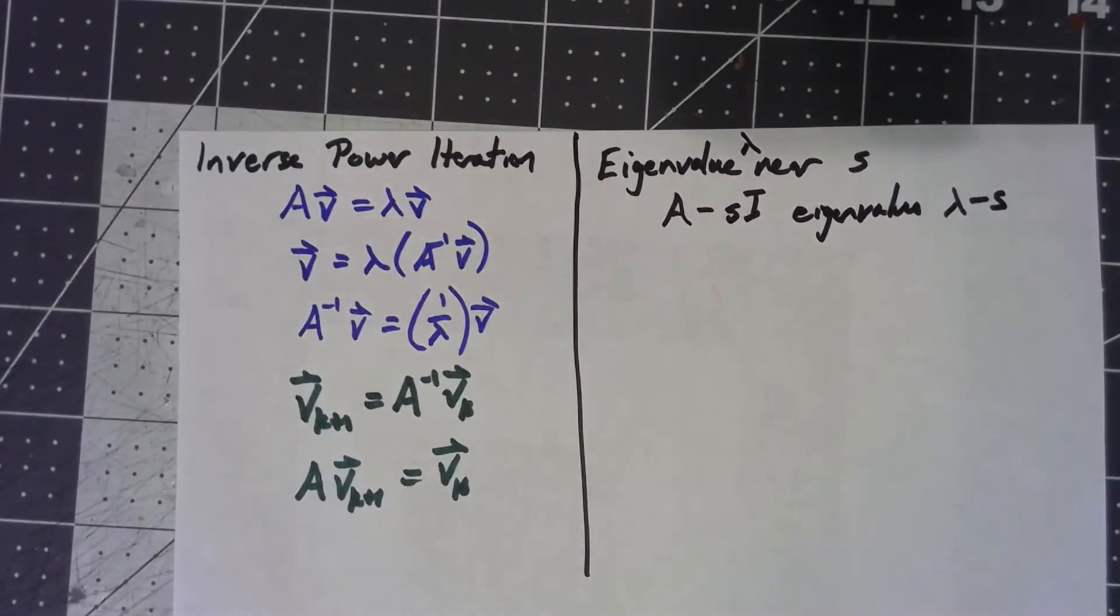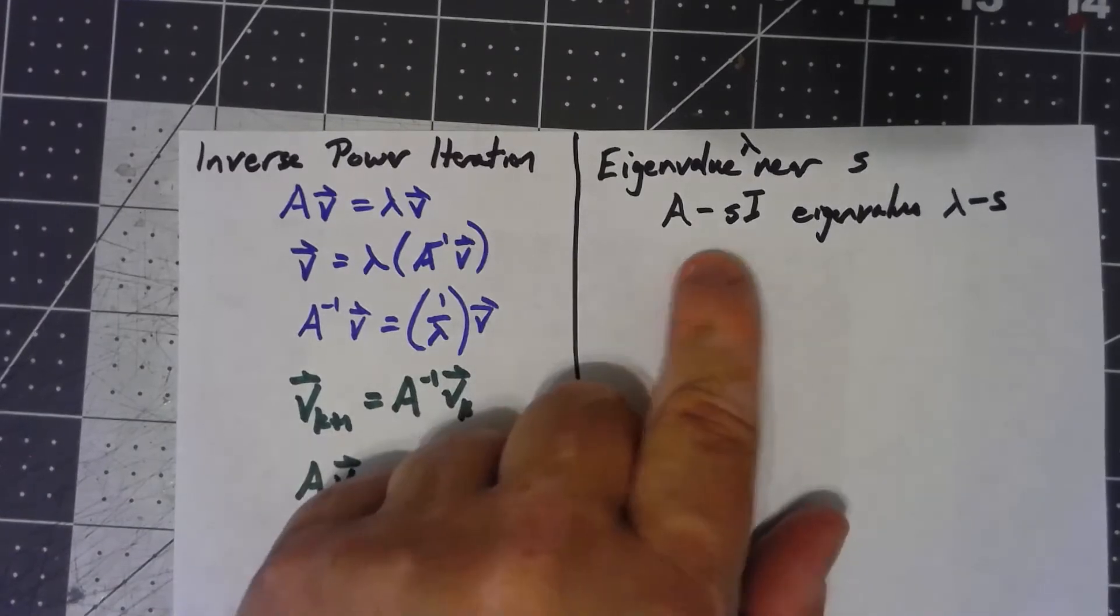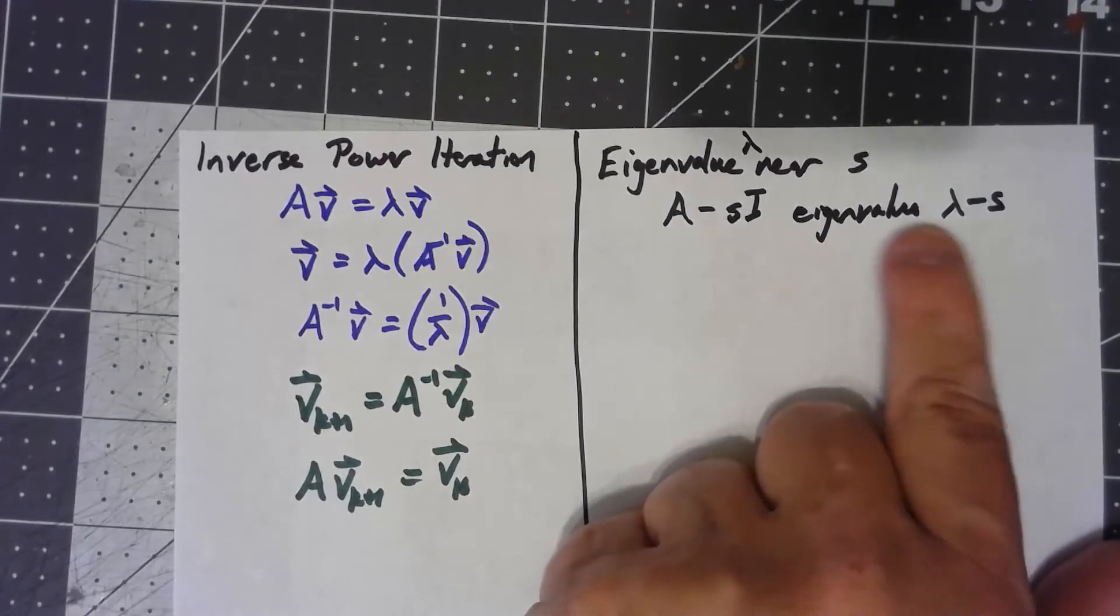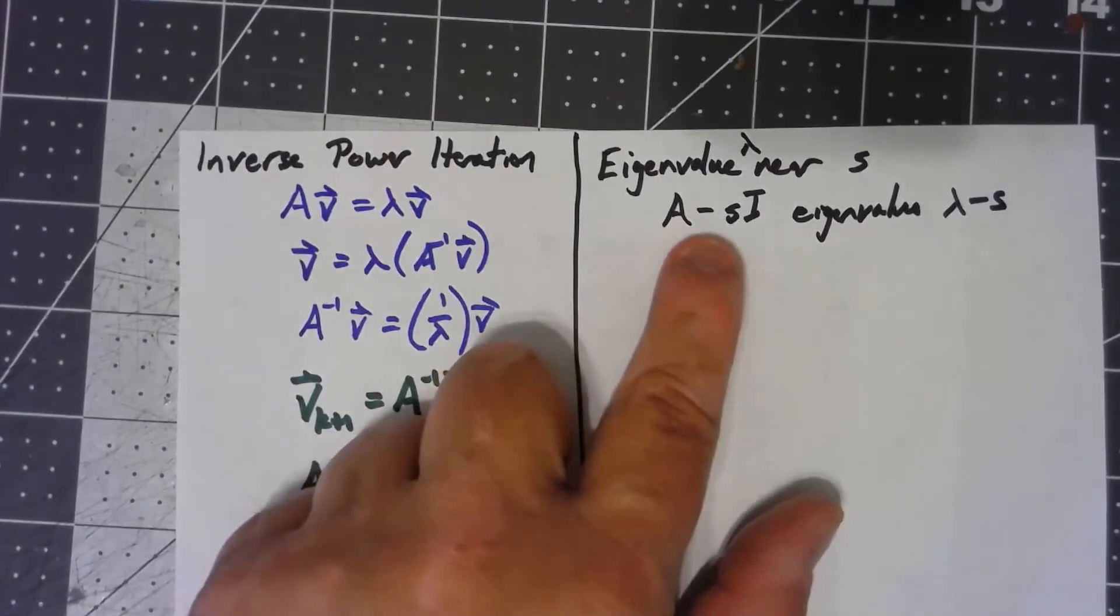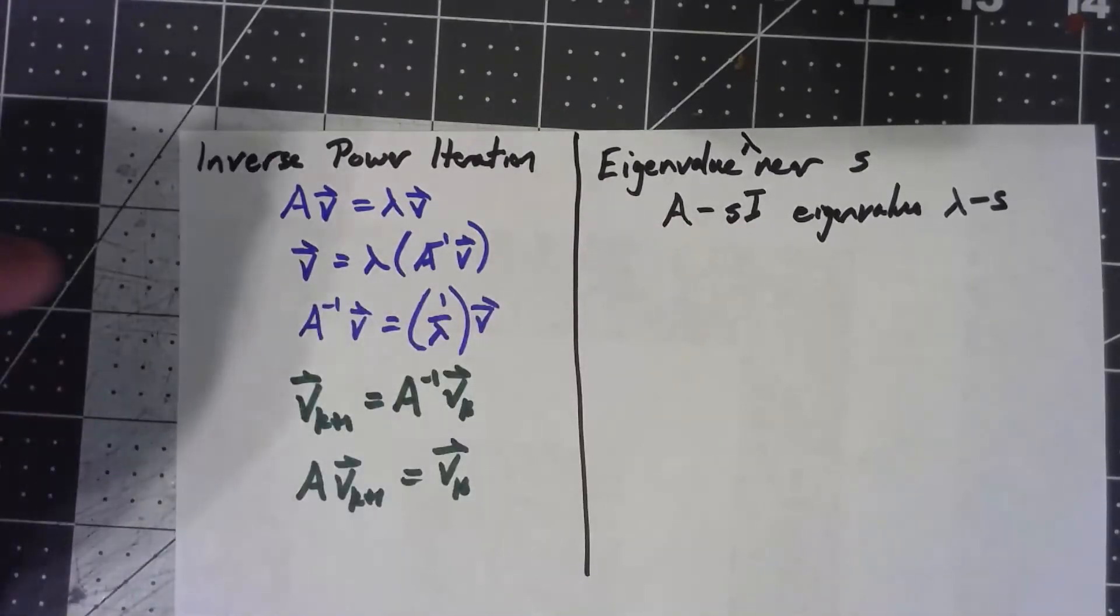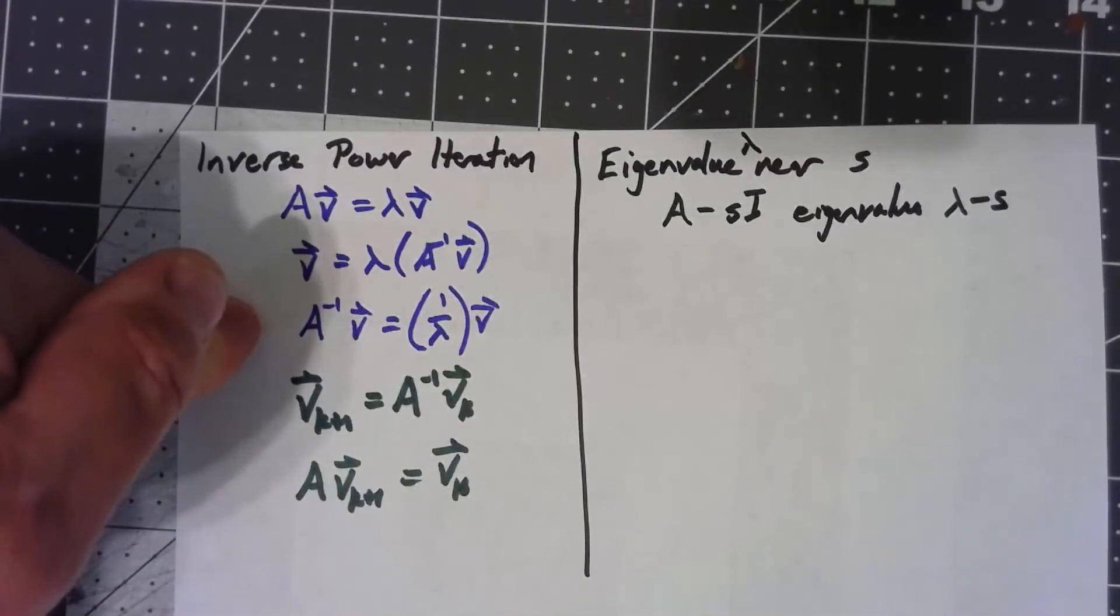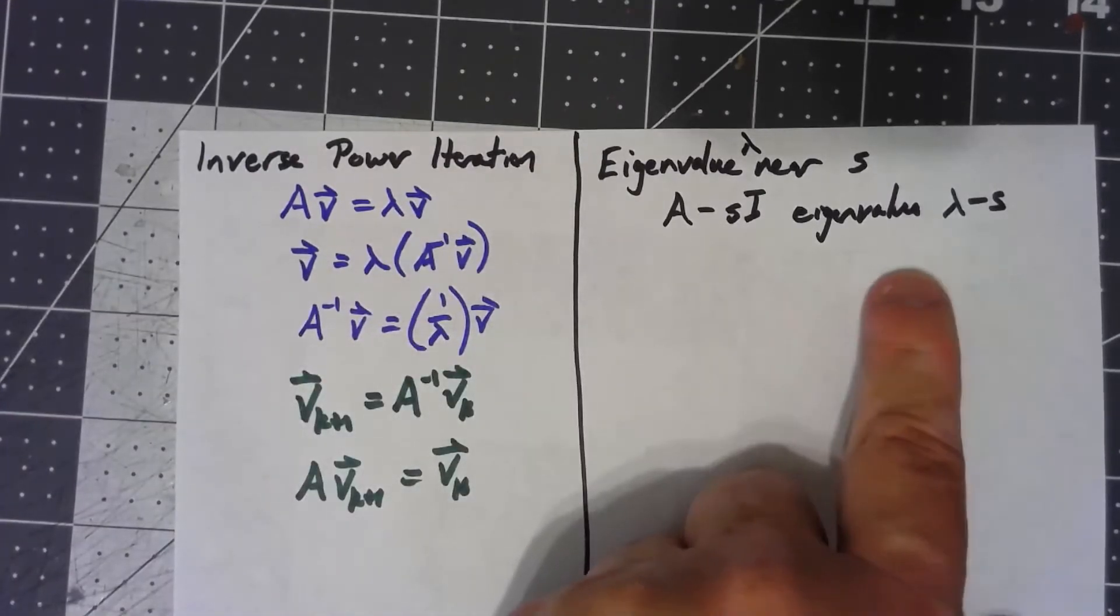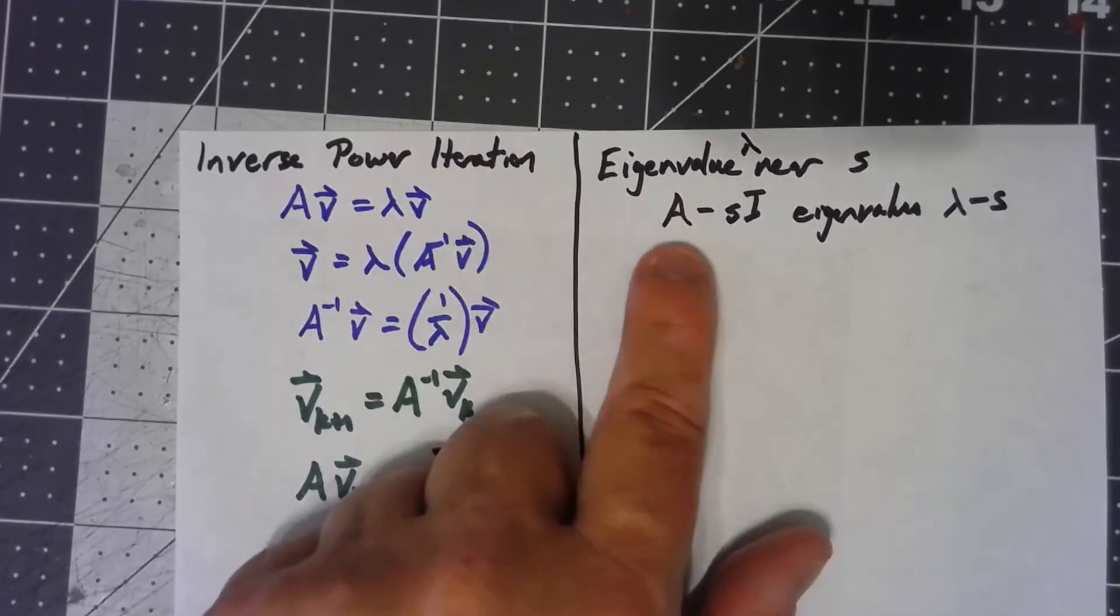So if by choosing the right s, I make this to be the smallest eigenvalue in A minus s I, this inverse power iteration finds the largest eigenvalue of A.